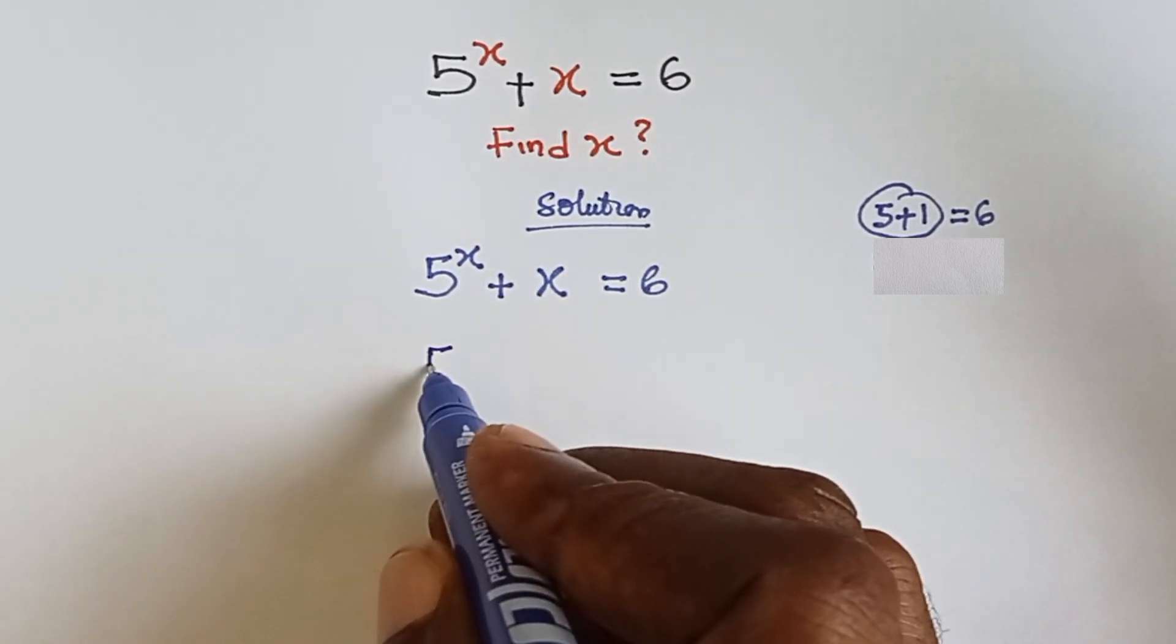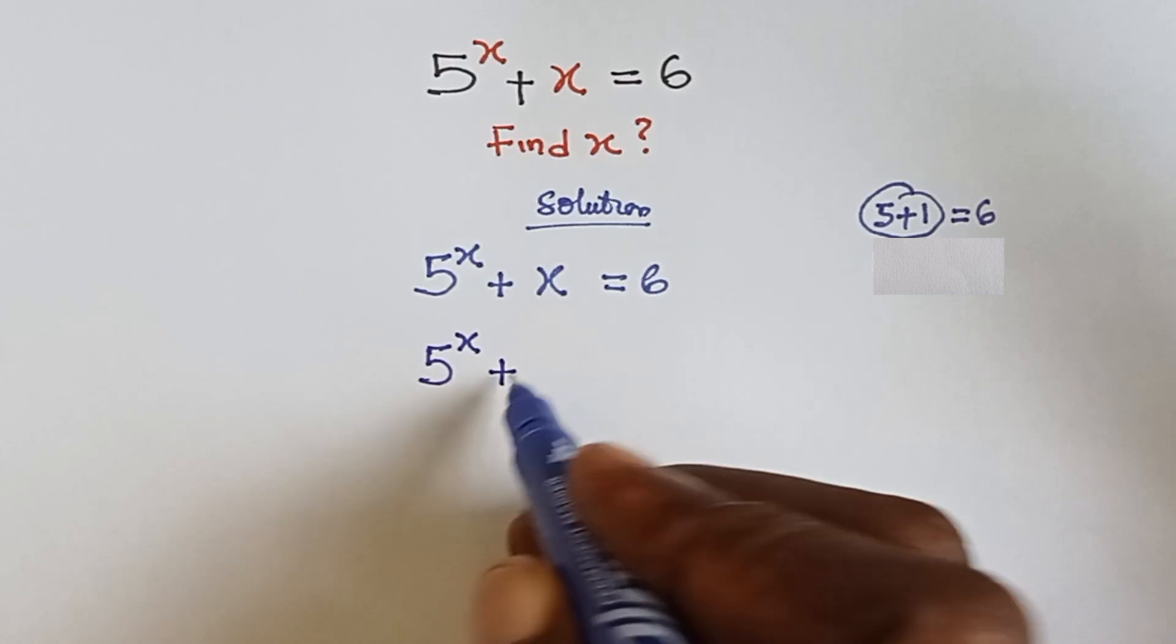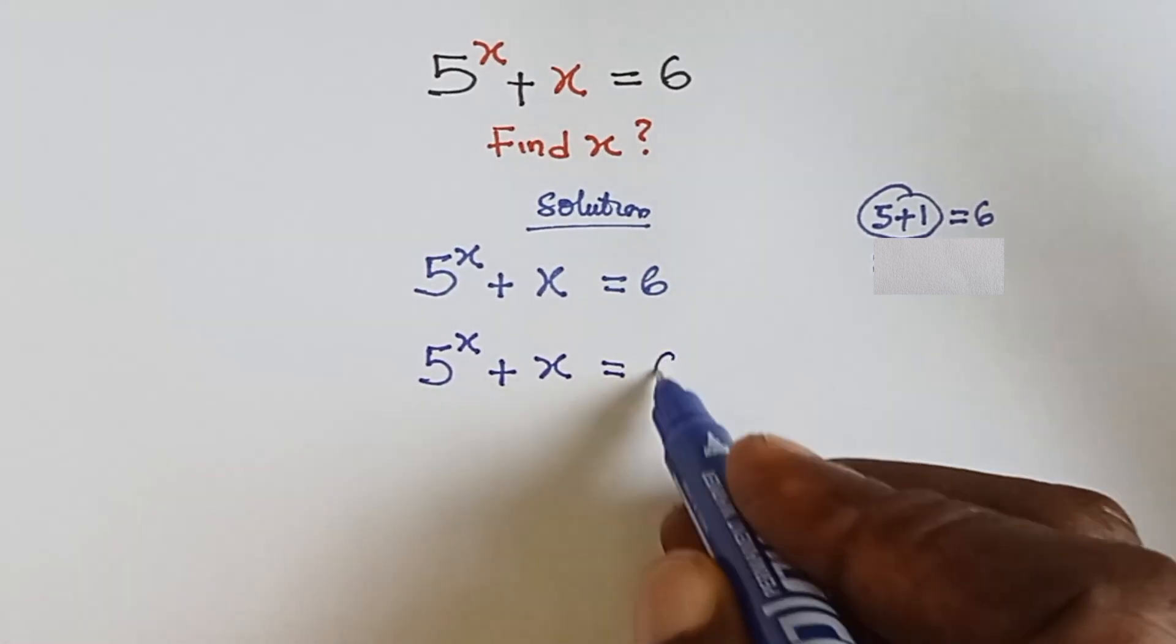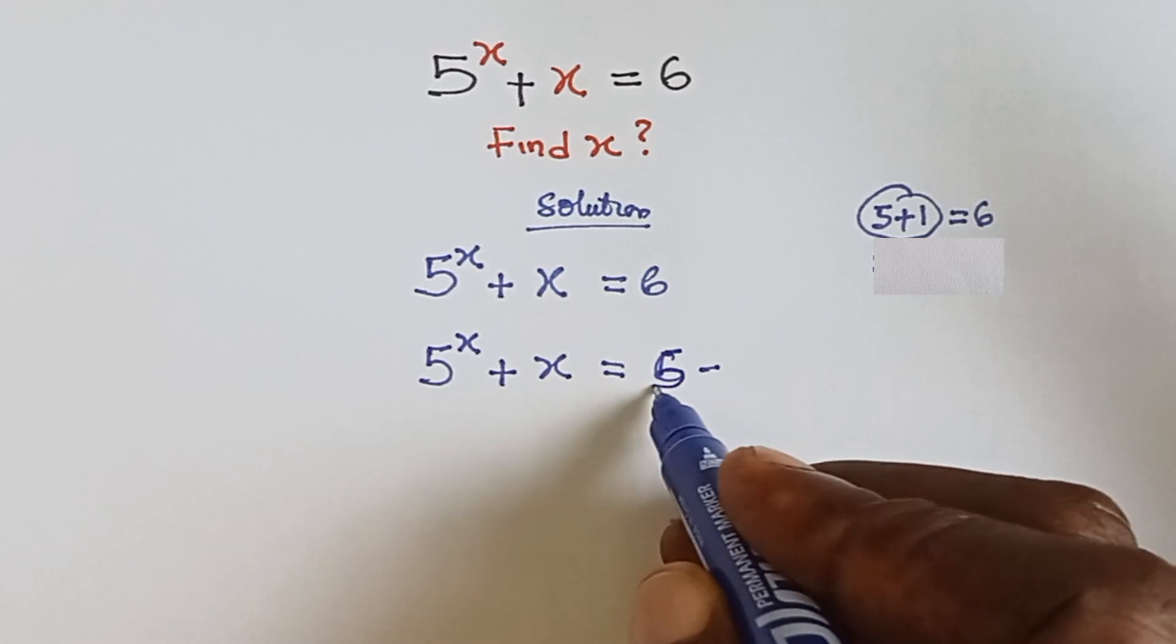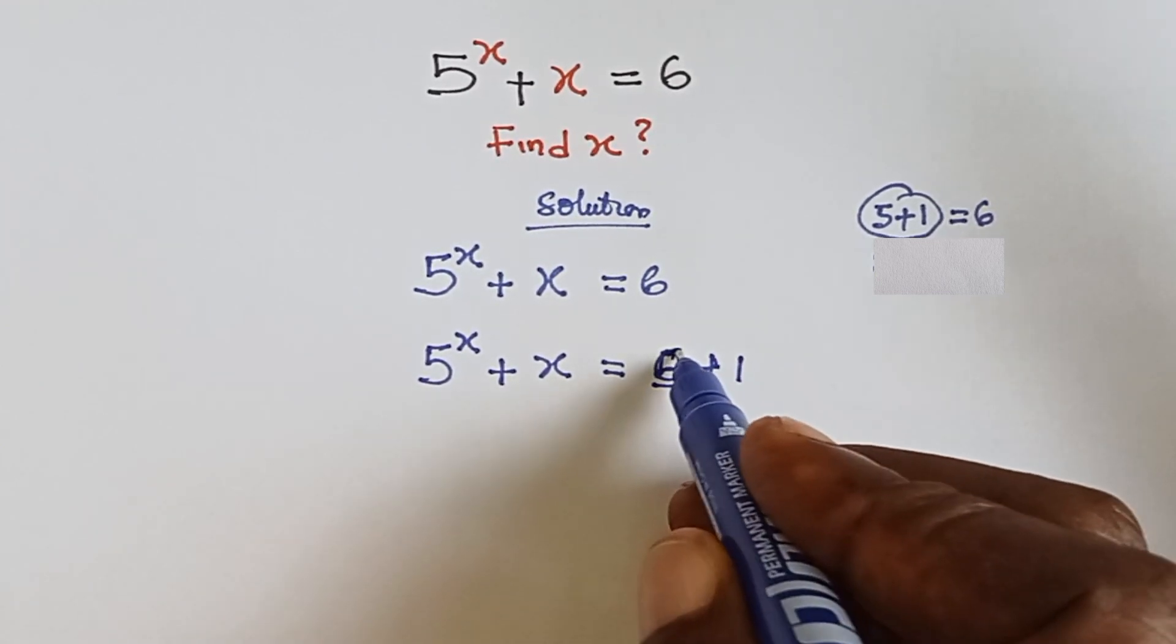All right, so we're going to write 5 raised to the power x plus x equals to 6, sorry, 5 plus 1, which will give us 6.